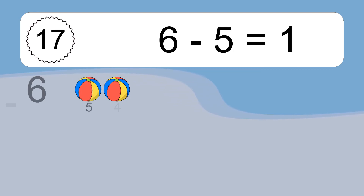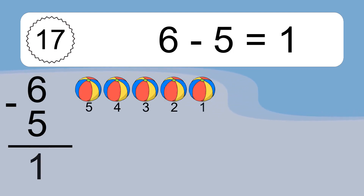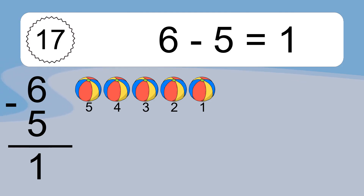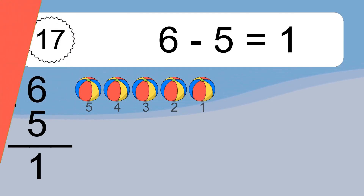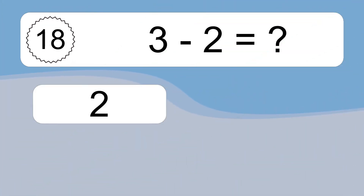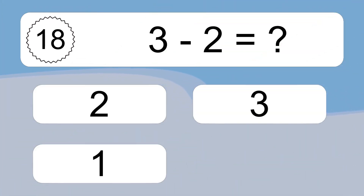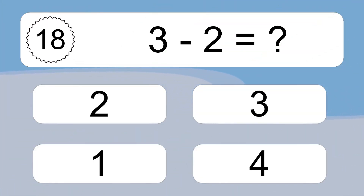6 minus 5 equals what? 6 minus 5 equals 1. Let's count it: 5, 4, 3, 2, 1.